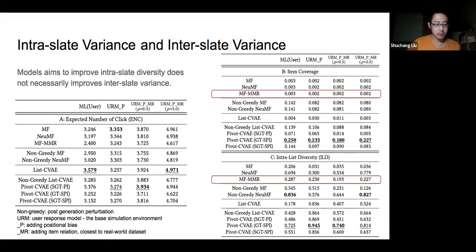In terms of diversity-aware models like maximal marginal relevance that applies re-ranking after generating the candidate list, they intentionally improve intra-slate variance but not necessarily inter-slate variance, since it is deterministic and always recommends the same list given the same input.